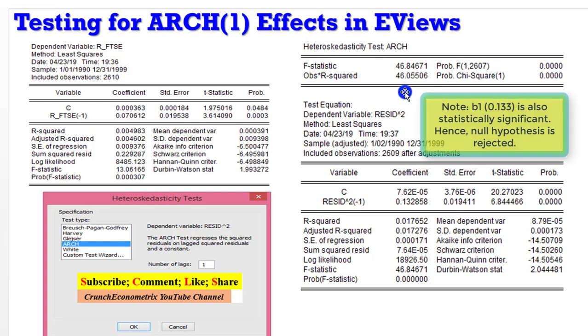The presence of ARCH is determined from the outcome of the Heteroskedasticity Test. If the p-value is not significant, that tells us there is no presence of ARCH effects. But if the p-value is significant, as we can see here, then we conclude that indeed there is presence of ARCH effects.